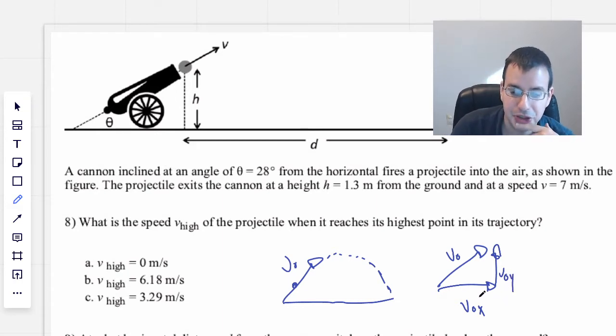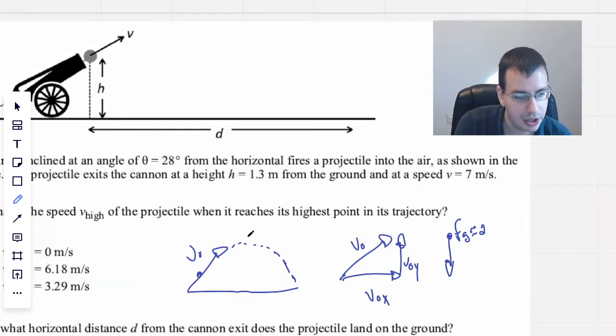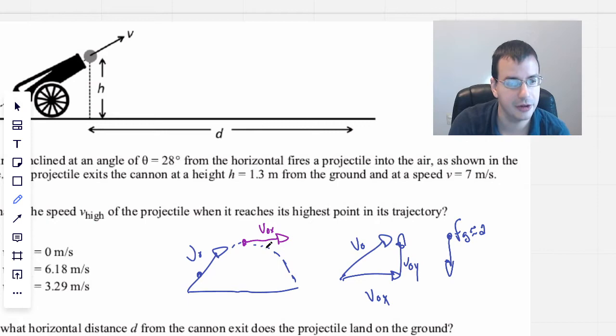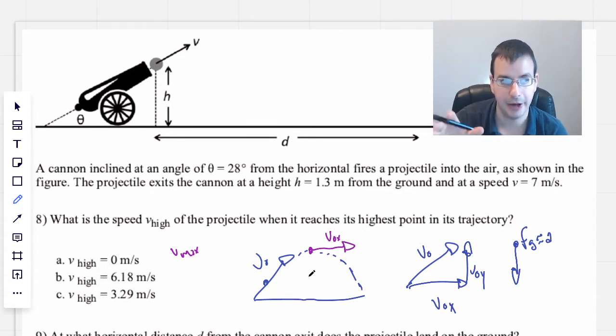We can take this V initial and break it up into two components - the x component and the y component. What's going to happen is as it goes higher, there's going to be gravity going down, the force due to gravity, which we can relate to the acceleration due to gravity, 9.81 meters per second squared.